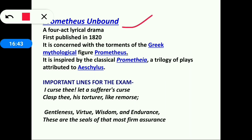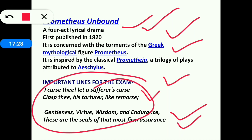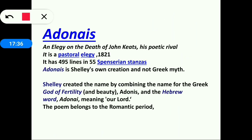Prometheus Unbound is a four-act lyrical drama published in 1820. It is concerned with the torments of the Greek mythological figure Prometheus, inspired by the classical Prometheia trilogy attributed to Aeschylus. Important exam lines: 'I curse thee — let a sufferer's curse clasp thee, his torturer, like remorse. Gentleness, virtue, wisdom, and endurance — these are the seals of that most firm assurance.'